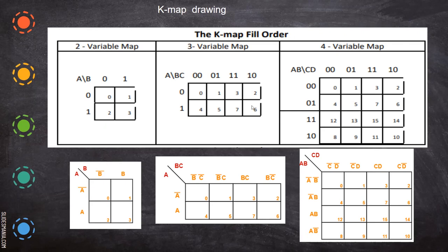This is how you write a three-variable Karnaugh map. Now the next one is the four-variable Karnaugh map. In this case, A and B are on one side and C, D on the other, giving four combinations on each side — 16 cells total. Two-to-the-power-three is eight cells for three variables, and two-to-the-power-four is 16 cells (a four-by-four matrix) for four variables.